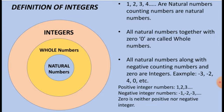We have positive integers such as 1, 2, 3 and negative integers such as minus 1, minus 2, minus 3, etc. 0 is neither a positive nor a negative integer, so 0 is called a whole number.